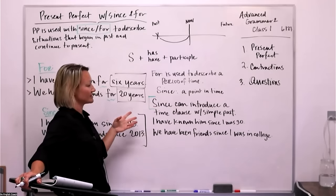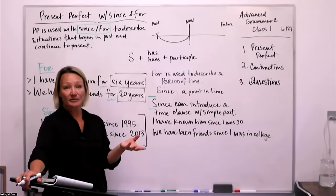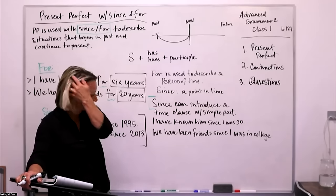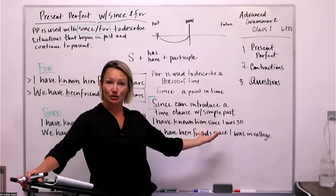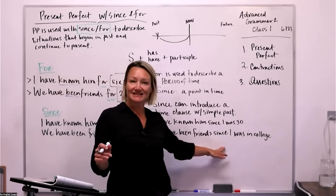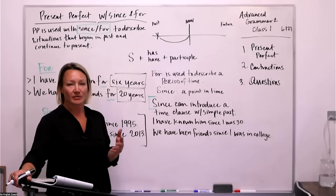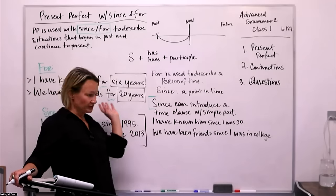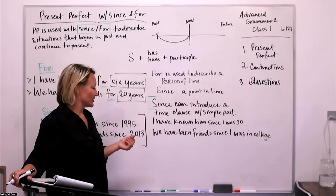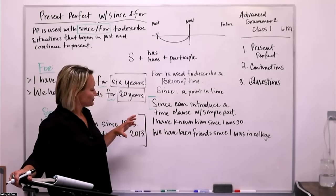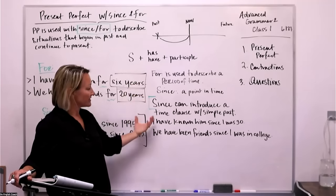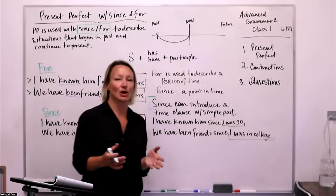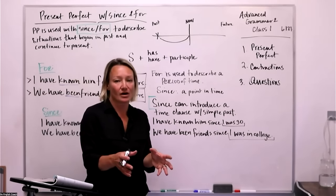Since can also introduce a time clause with simple past. So I could say: we have been friends since I was little — that's a point in time in the past. I have known him since I was thirty. We have been friends since I was in college. We use that one a lot — many people meet friends in college and stay friends for years. A clause is just a part of a sentence that gives you more information.